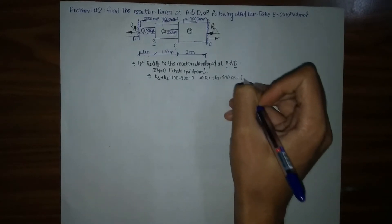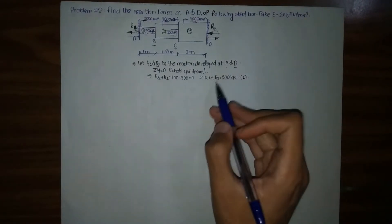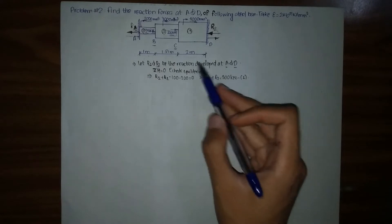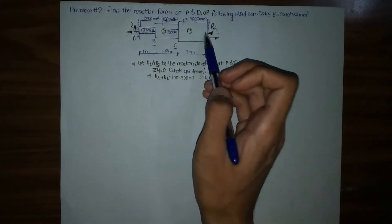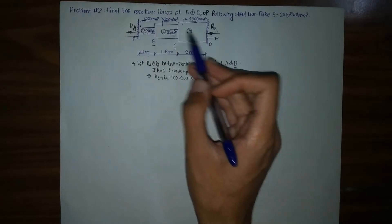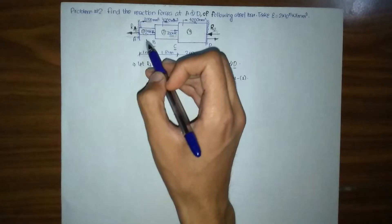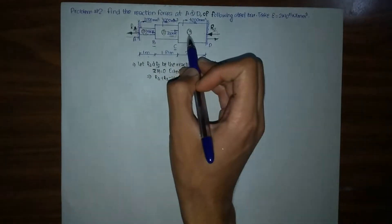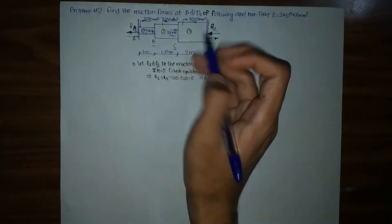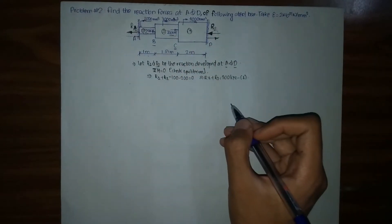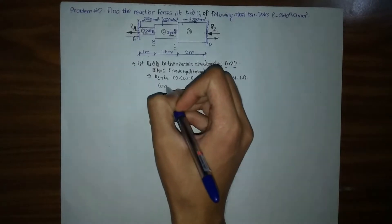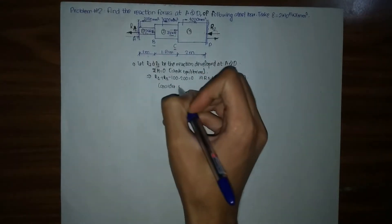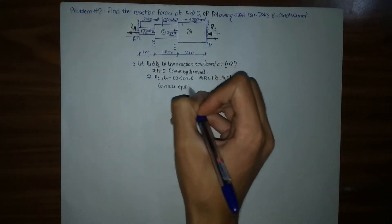This is our first equation. Since the overall steel bar is in equilibrium, portions 1, 2, and 3 must also individually be in equilibrium. We will now consider the equilibrium of each part.